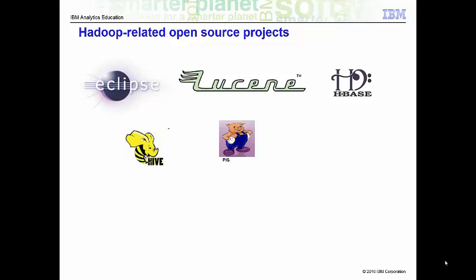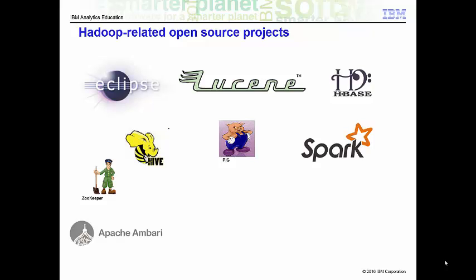Pig is a high-level language that generates MapReduce code to analyze large datasets. Spark is a cluster computing framework. ZooKeeper is a centralized configuration service and naming registry for large distributed systems.